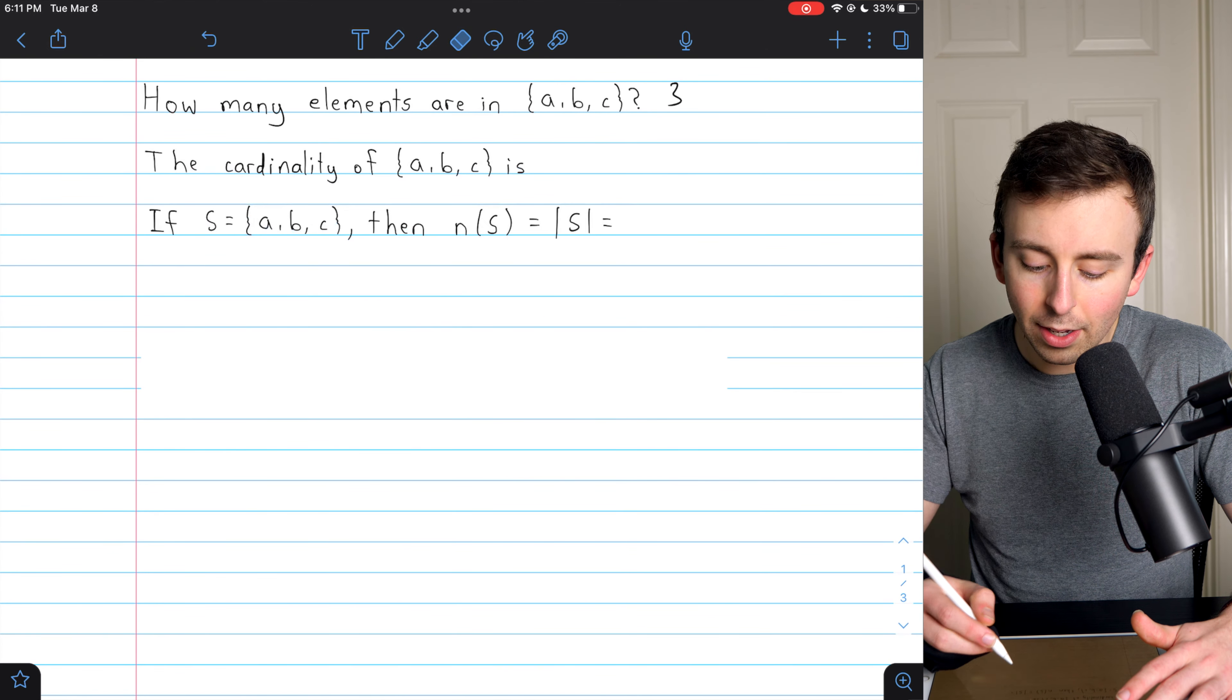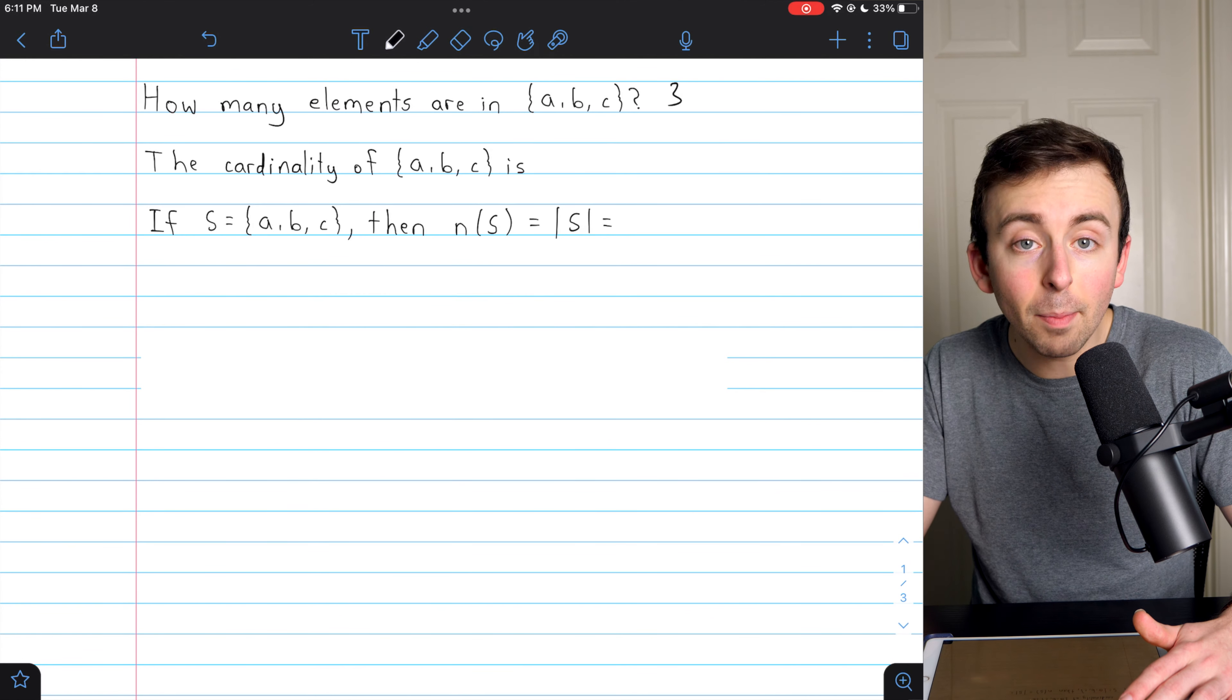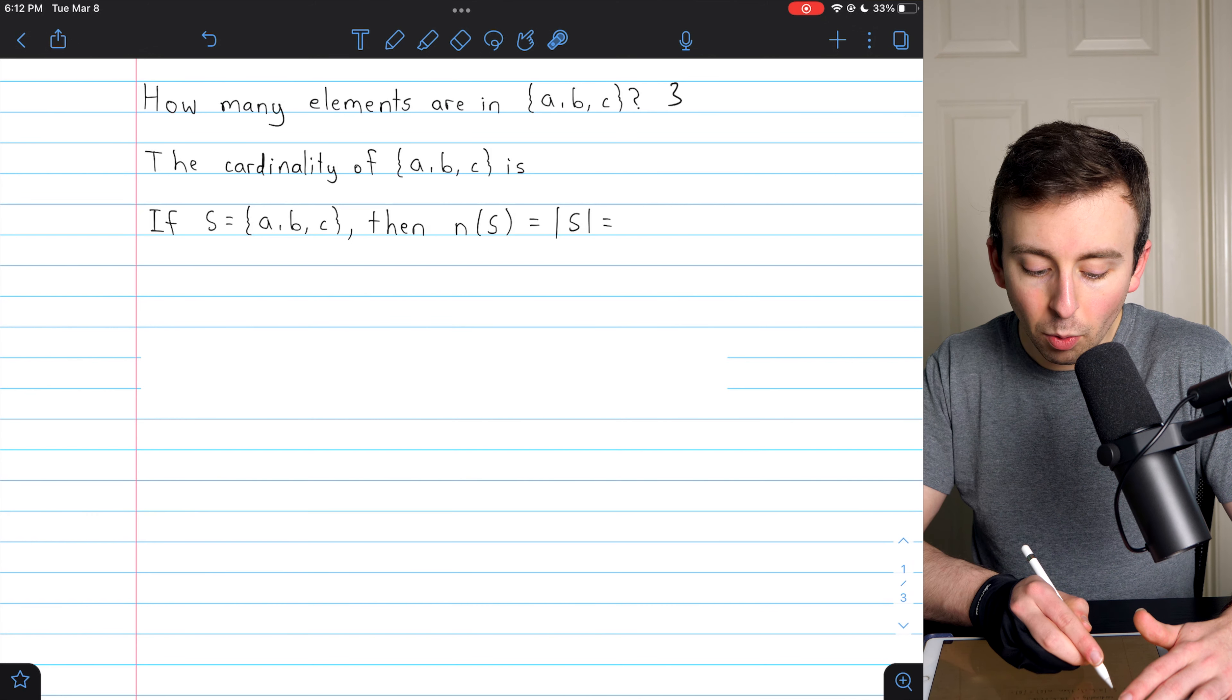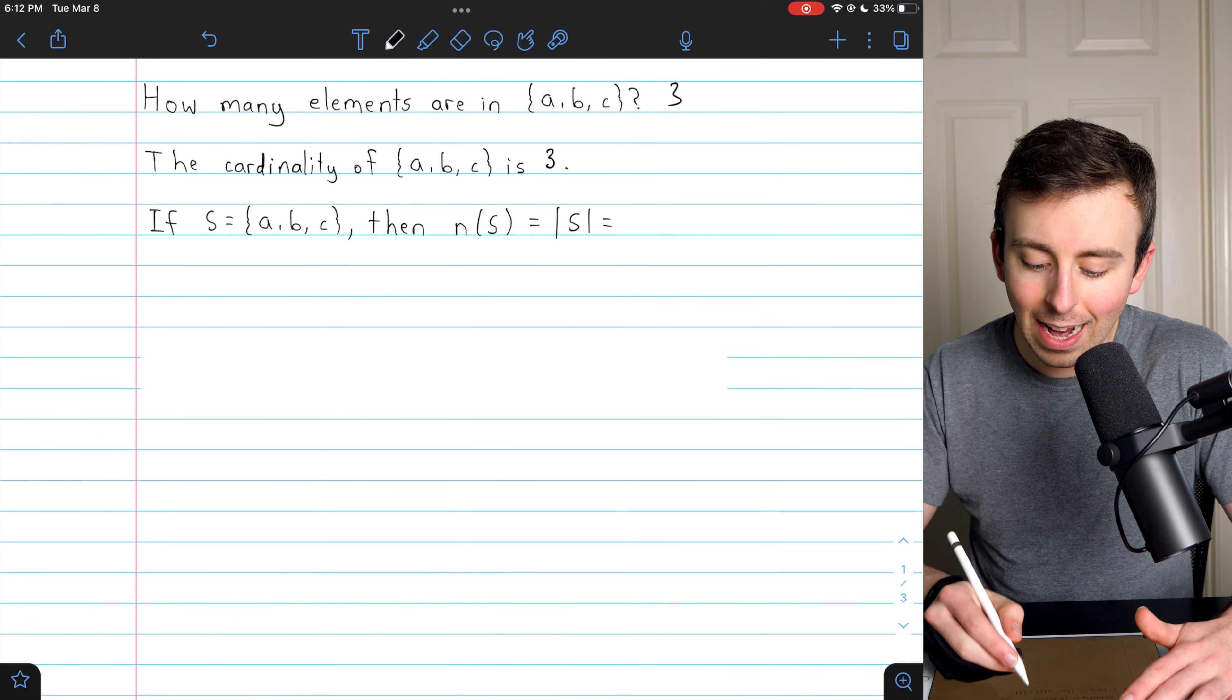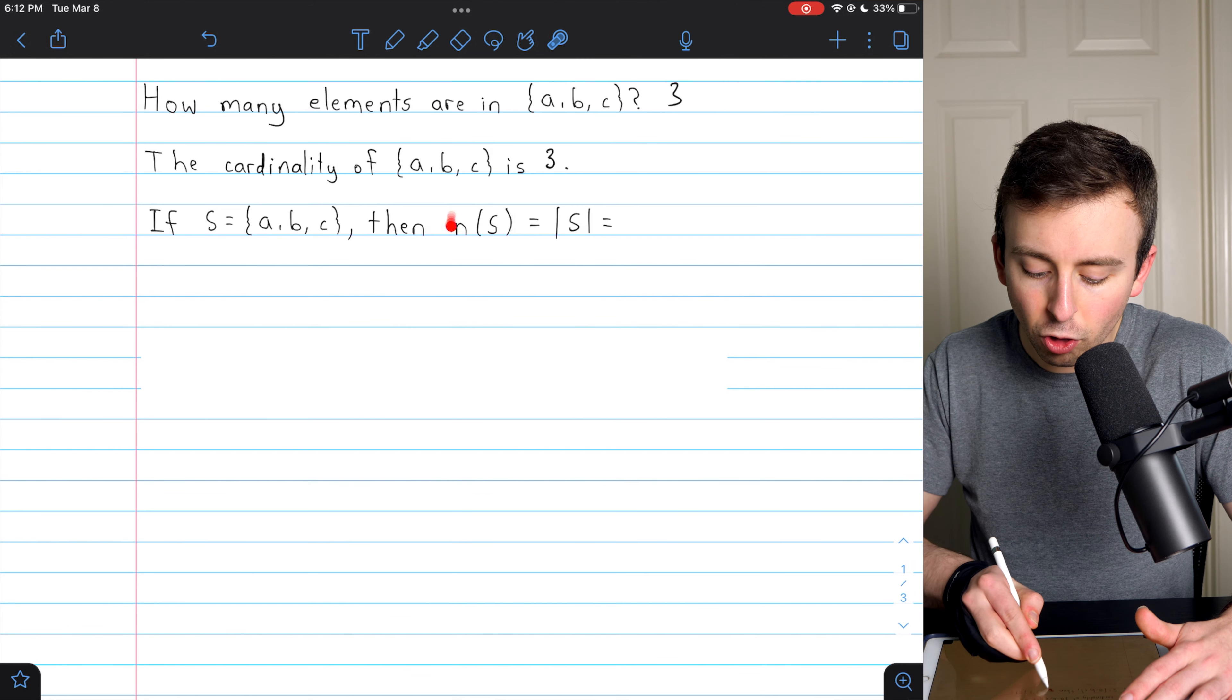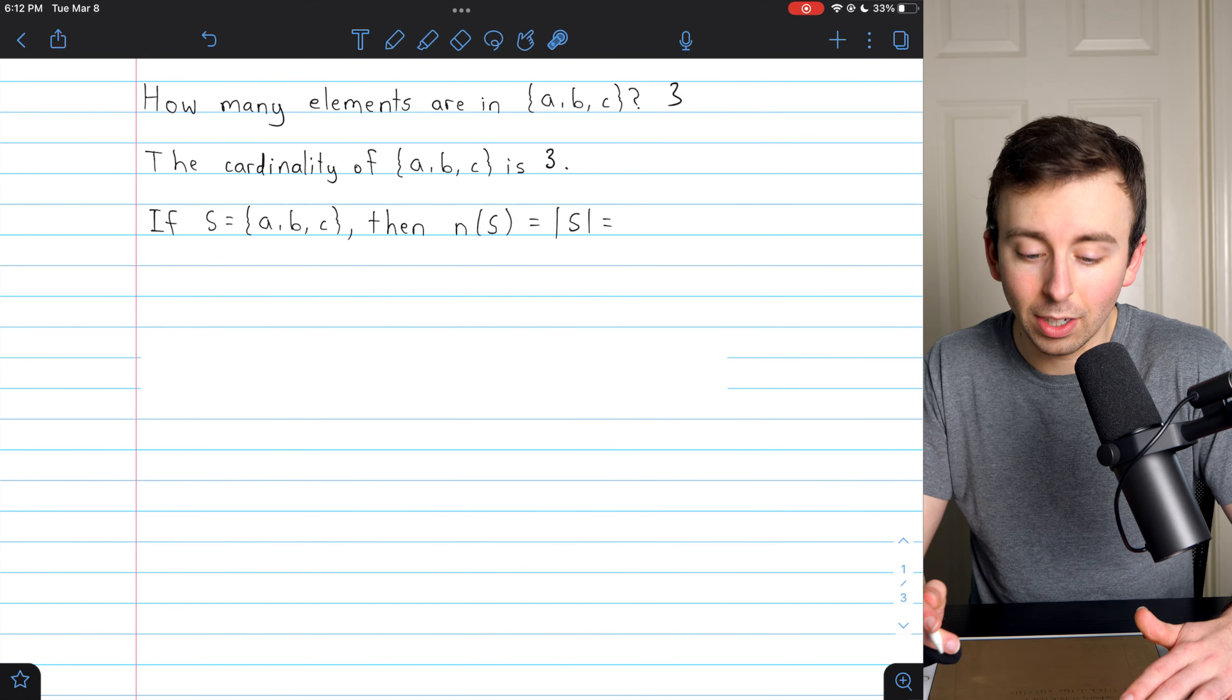Here's a couple other ways we could say that with some notation and terminology. The number of elements in a set is the set's cardinality. So we could say that the cardinality of this set is three. It has three elements, so its cardinality is three. And some notation we use for that is shown here. Let's say we call this set S just for convenience.